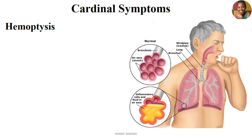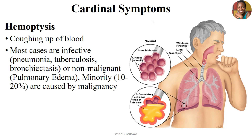To close the cardinal symptoms, we have hemoptysis — the coughing up of blood. Most of the time, coughing up blood indicates different illnesses such as pneumonia, TB, bronchiectasis, or non-malignant conditions like pulmonary edema. In a minority of cases — about 10 to 20 percent — it indicates malignancy, tumors, or cancer. So if you see blood in the cough or sputum, think of infections such as pneumonia, TB, or bronchiectasis, but also consider pulmonary edema.